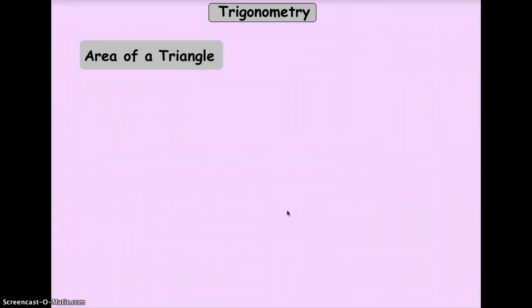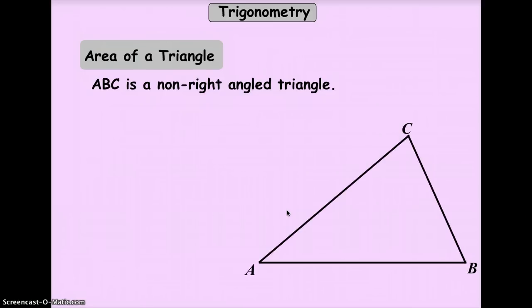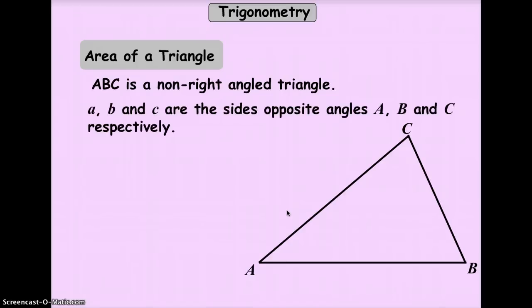Let's derive the formula or the equation for you to be able to solve the area of a triangle. I'm going to give you a non-right-angled triangle, which is called triangle ABC. In this triangle, we're going to label its corresponding sides. For each angle, there's a corresponding side, just like what you have learned in the classroom.